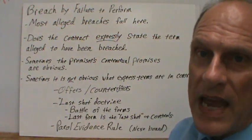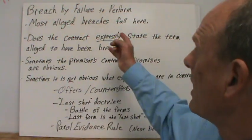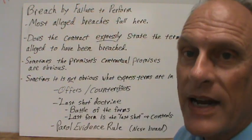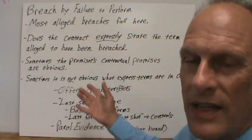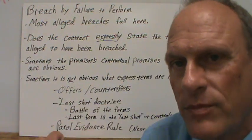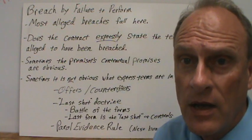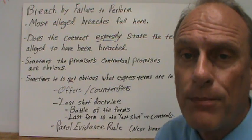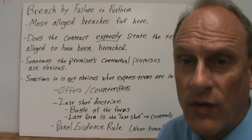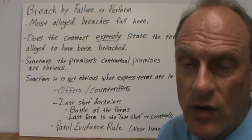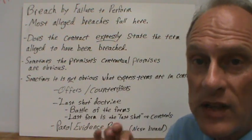The most common of the three categories of breach is the second one: breach by failure to perform, or non-performance. Here we're looking for the term alleged to be breached — is it in the contract? You need to understand the difference between an express term, something spelled out in the contract, and a term that is implied because it arises from other sources. Out of fairness, we may imply a term in the contract even though it may not be expressed.